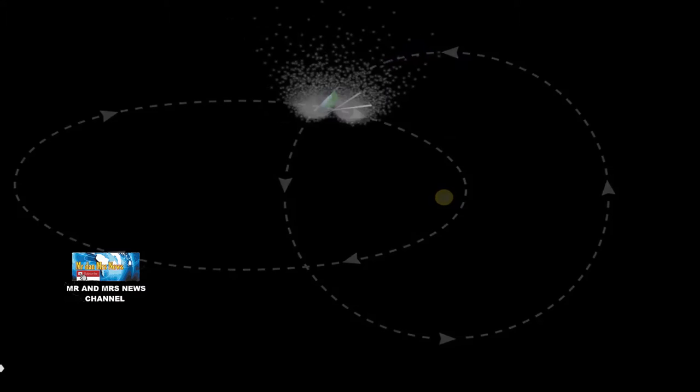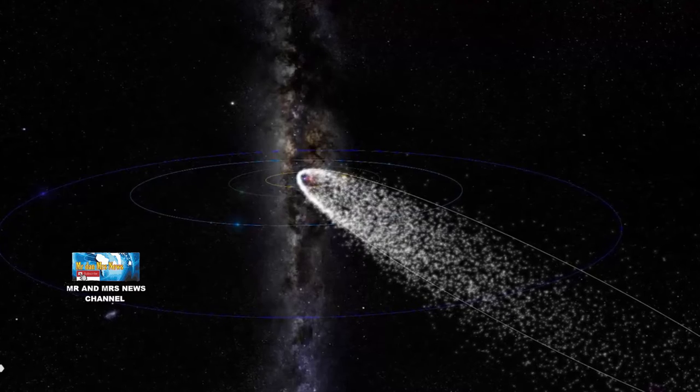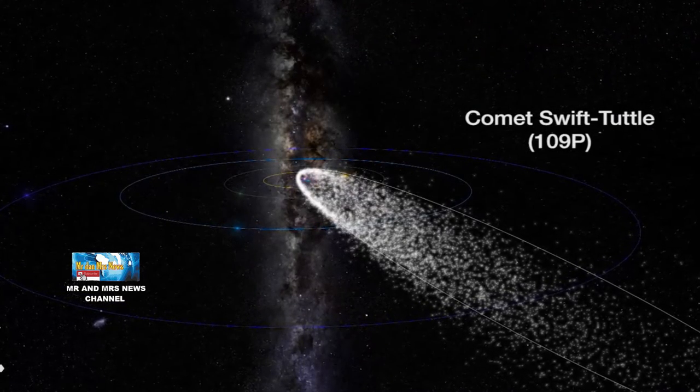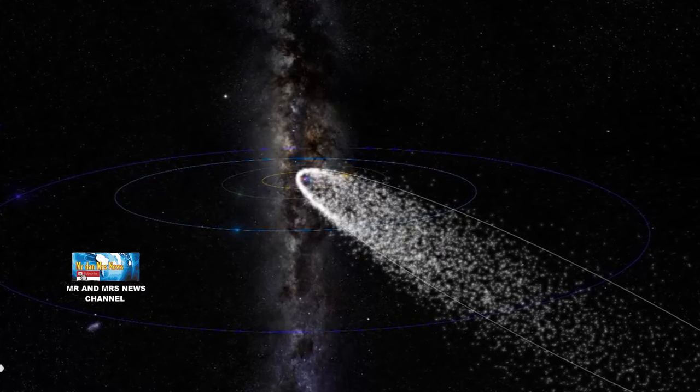Diketahui pada hujan meteor Perseid sekitar 50-100 meteor terlihat per jam. Adapun hujan meteor Perseid berasal dari Komet 109P Swift-Tuttle.